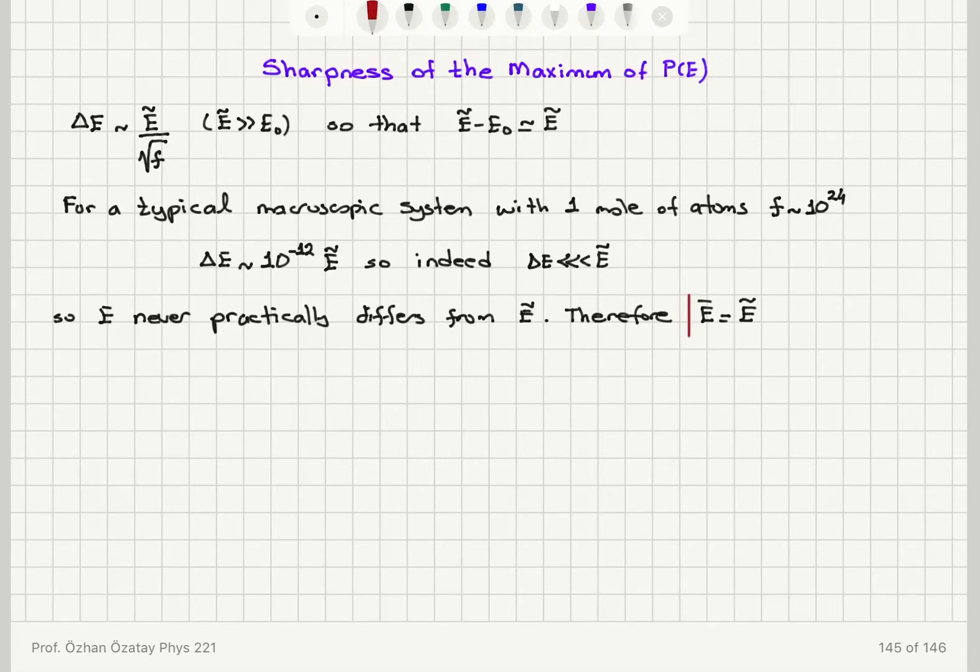So mean energy and most probable energy are the same thing in this case. And if you consider the relative magnitude of the fluctuations,